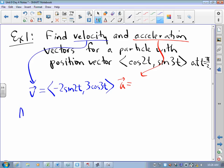I want that at pi over 2. So I've got to think to myself, sine of pi, sine of pi is 0. Cosine of 3 pi over 2, that's 0. The velocity vector is the 0 vector.